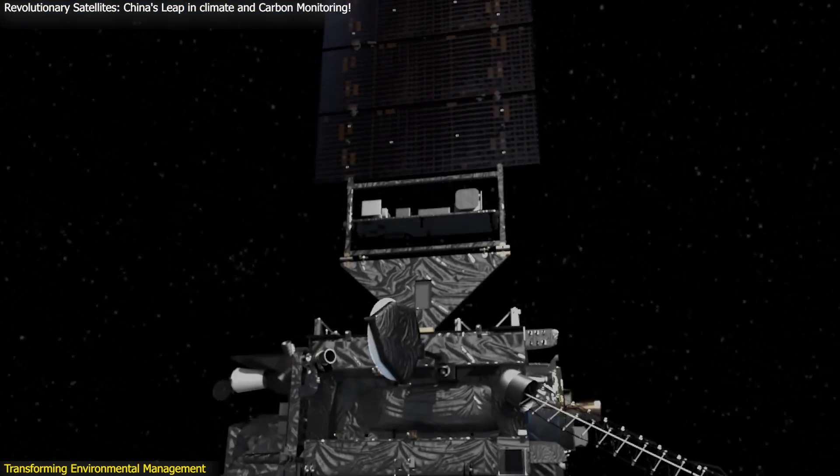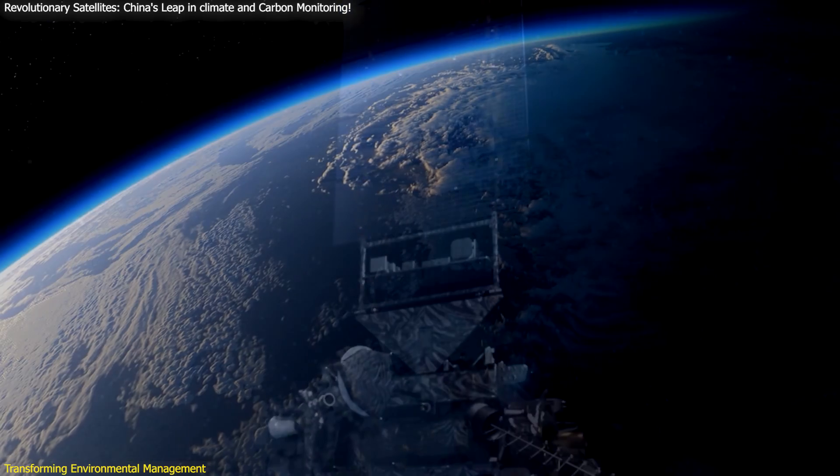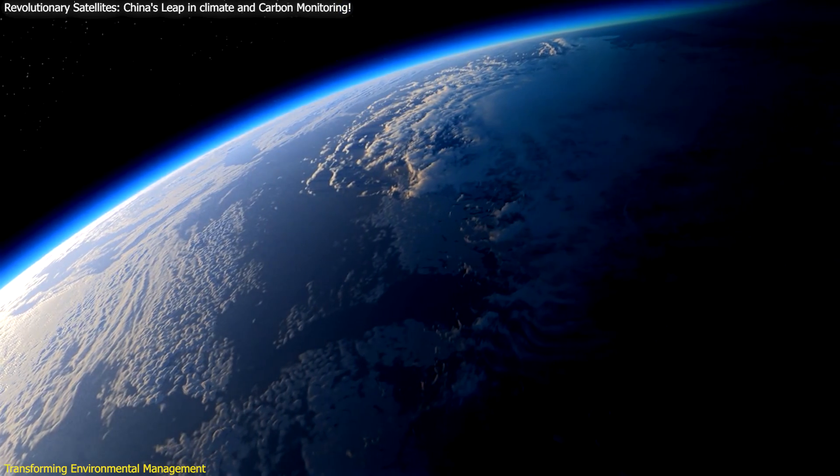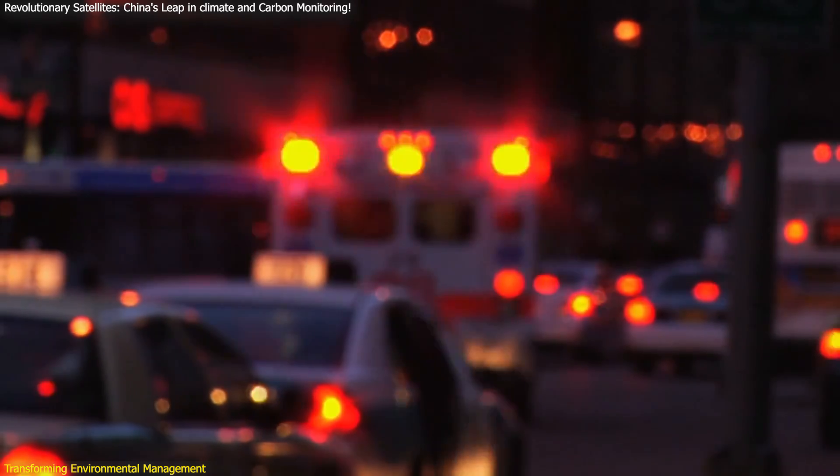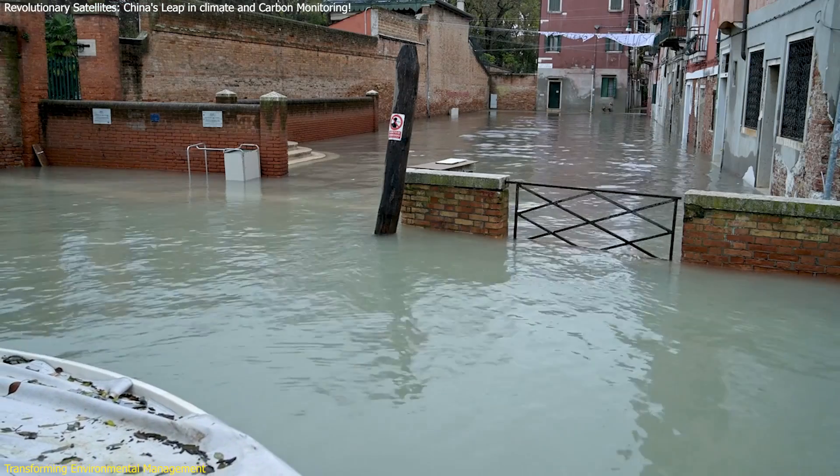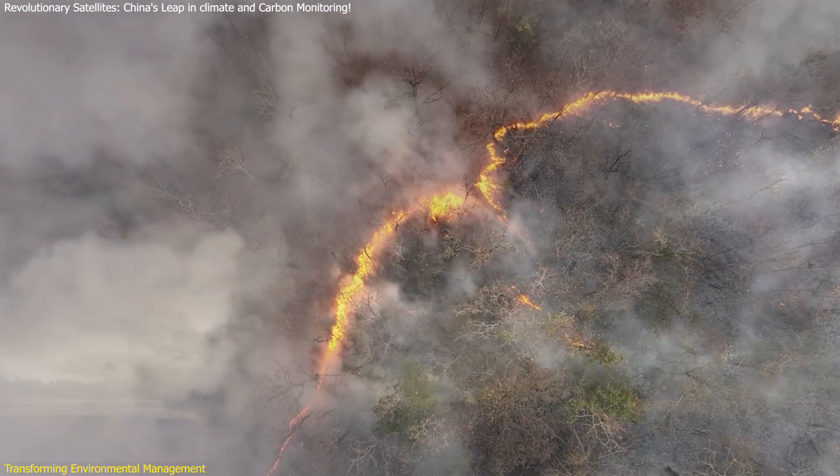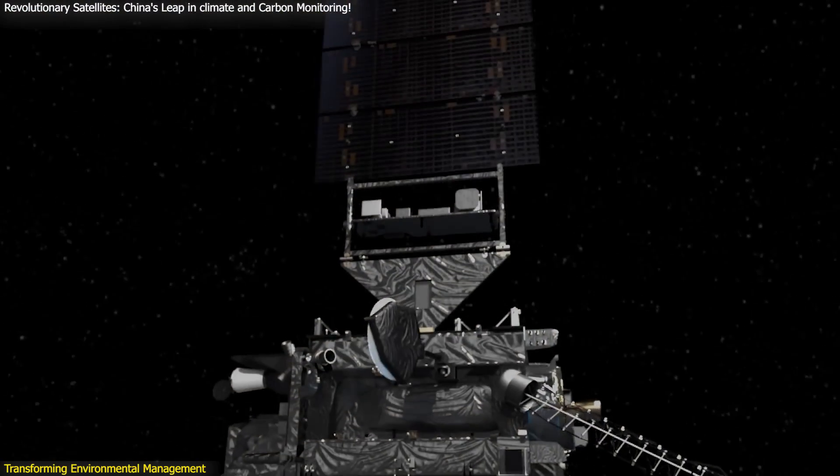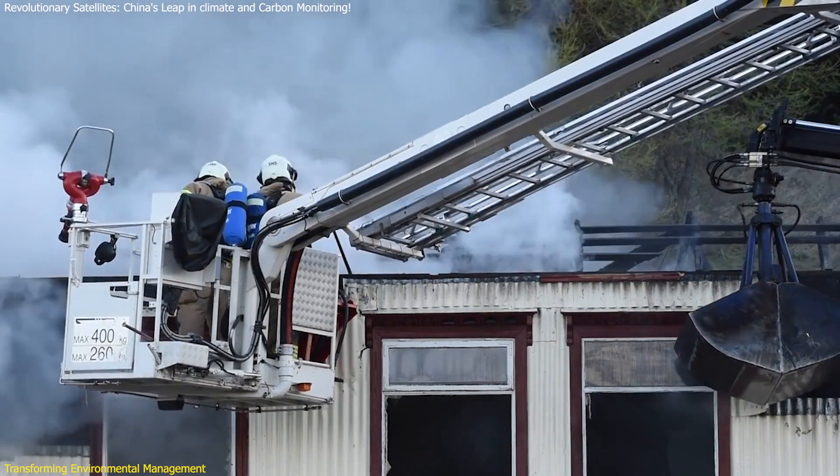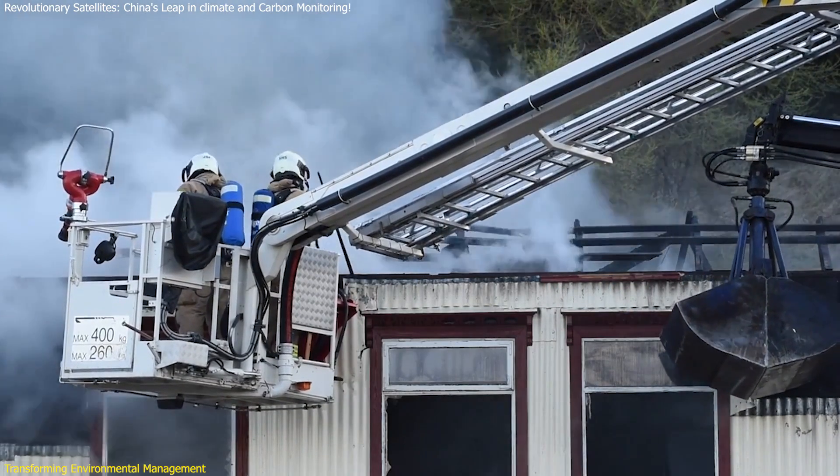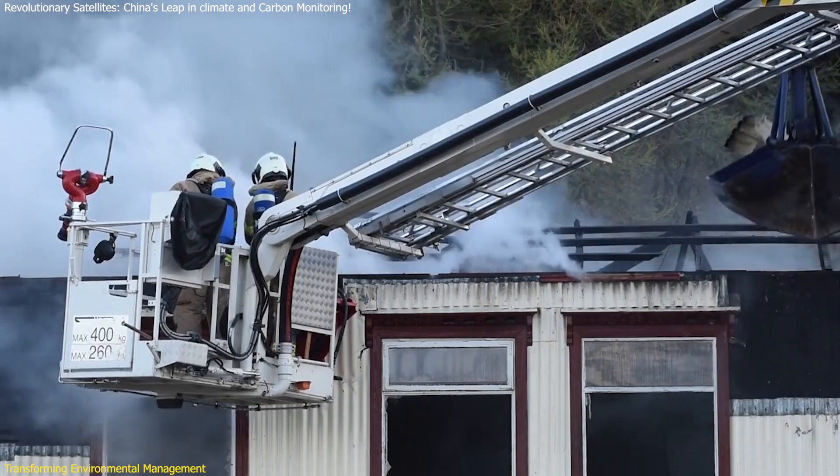The satellites enhance emergency disaster response capabilities. The ability to monitor environmental changes in real time allows for timely disaster assessment and response. For example, during natural disasters like floods, wildfires, or hurricanes, these satellites can provide critical data on affected areas, helping emergency services coordinate relief efforts and minimize damage. This real-time monitoring capability is vital for protecting lives and property during emergencies.